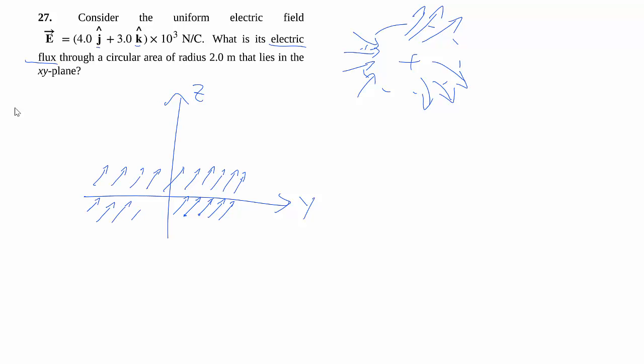And as a vector field, we have to draw an arrow like that for every single point. We're going to first join these up into a field line diagram, but that's not the key point here. The key point is how much of this intersects a particular surface, which is a circular area of radius 2 meters that lies in the XY plane. So in this view, the XY plane is just here, so we have some kind of surface.